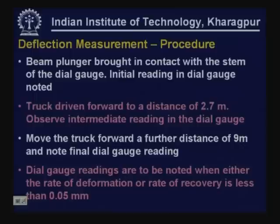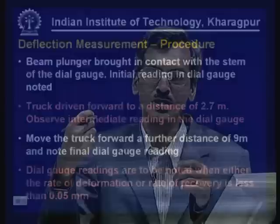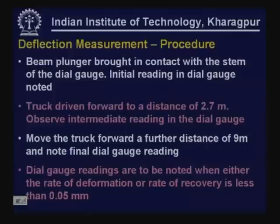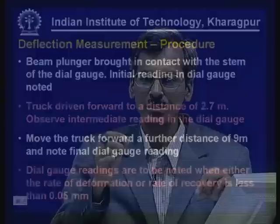The beam plunger is brought in contact with the stem of the dial gauge. The beam plunger arrangement at the end of the beam supports the plunger of the dial gauge, so as the beam rotates the dial gauge records movement. The initial reading in the dial gauge is noted. Since the load is already placed on the point and the probe is between the wheel loads, this is the initial deflected position, and the corresponding position of the beam end is noted using the dial gauge.